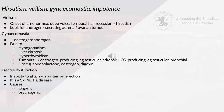Virilism is the onset of amenorrhea, deep voice, temporal hair recession and hirsutism, and requires investigation for an androgen-secreting adrenal or ovarian tumour. Gynecomastia is increased oestrogen due to hypogonadism, liver cirrhosis, hypothyroidism, tumours producing oestrogen — testicular, adrenal or HCG-producing such as testicular or bronchial tumours — or drugs such as spironolactone, oestrogen or digoxin.